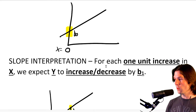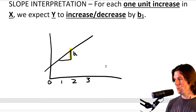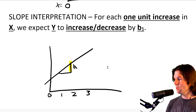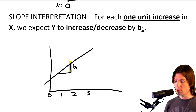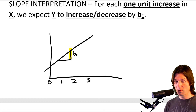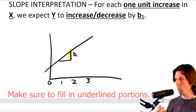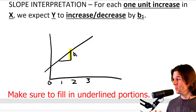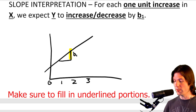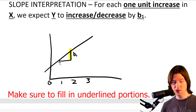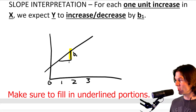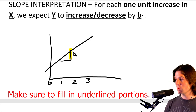When you think about the slope, let's see what a one unit increase looks like. For each one unit increase in X, we expect Y to increase or decrease by B1 — and this is what the slope is. There's a one unit increase in X, and this is what we expect to happen to Y.